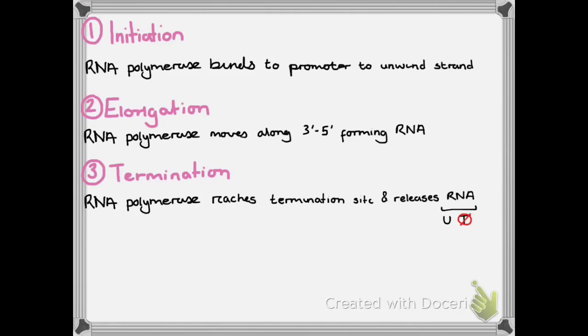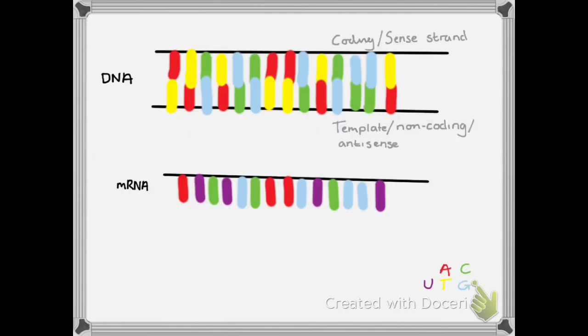You then have elongation, which is when the RNA polymerase moves from the 5 to the 3 prime end of the DNA template strand, forming mRNA. Third and finally is termination. This is when the enzyme reaches the termination site and releases the newly formed mRNA molecule. It's important to remember that this is actually an exact replica of the sense strand, apart from the fact that the T bases are actually U bases, which is uracil.